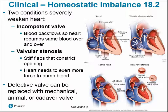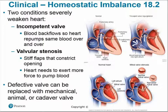Homeostatic imbalances with heart valves include an incompetent valve, where blood backflows and the heart repumps the same blood over and over. With a weak or faulty valve, when the ventricle contracts, blood goes back up into the atria instead of out through the pulmonary trunk. Valvular stenosis is a stiffening of the valve that constricts it from opening, forcing the heart to exert more contraction force. A defective valve can be replaced with a mechanical, animal, or cadaver valve — animal valves are typically from pig or cow.